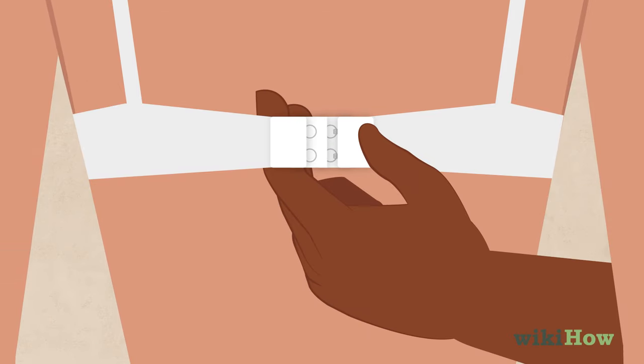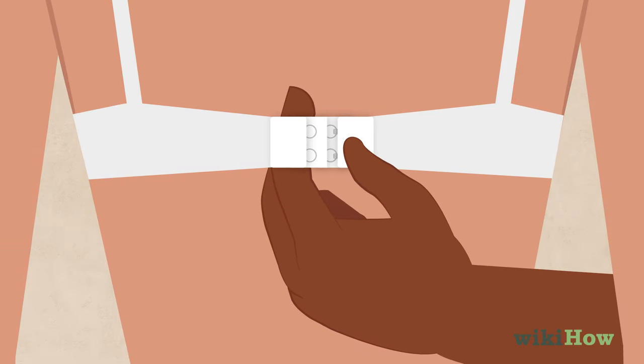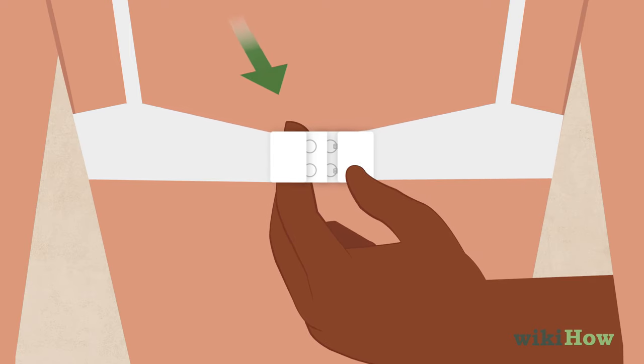Then, slide your middle and index fingers under the band of the bra where the clasp is. Gently pull the band away from their body.